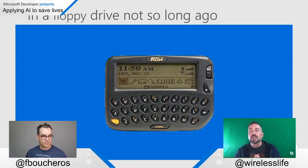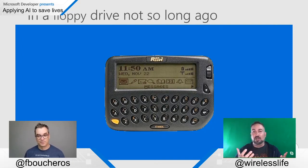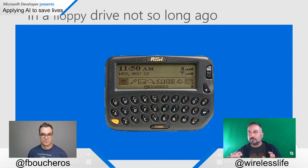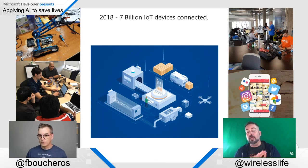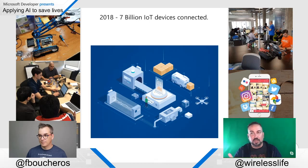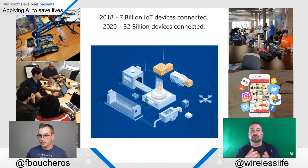Then the BlackBerry happened — and I'll argue tooth and nail it was the BlackBerry, not the iPhone, that was the first truly connected device people had in their hands. It received email, ran on a single AA battery, lasted three days, on a proprietary network. People couldn't even fathom it: 'I can read my emails from anywhere.' That was enormous. Now in 2018 there were 7 billion IoT devices connected, and by 2020 an estimated 32 billion — you don't really hear 'IoT devices' anymore, you just hear 'devices,' because everything from refrigerators to light bulbs to cars is connected.